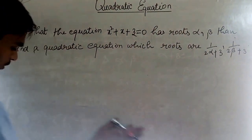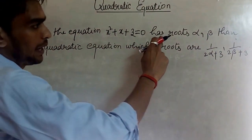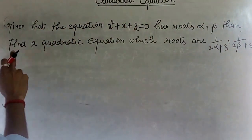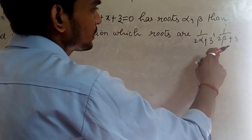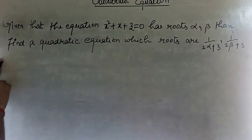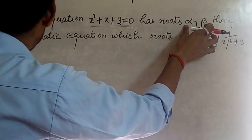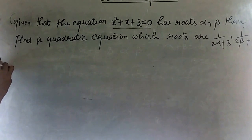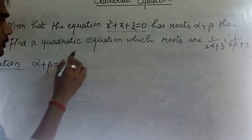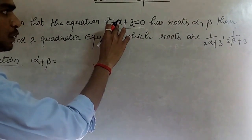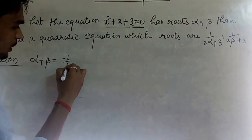Now let us solve another example. The problem is: given that the equation x² + x + 3 = 0 has roots alpha and beta, find a quadratic equation whose roots are 1/(2alpha + 3) and 1/(2beta + 3). From the given equation, where B = 1, A = 1, and C = 3, we know alpha + beta = −B/A = −1/1 = −1. Similarly, alpha × beta = C/A = 3.